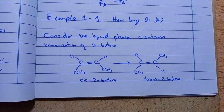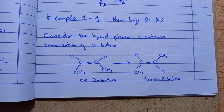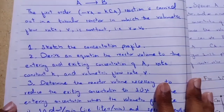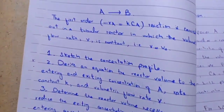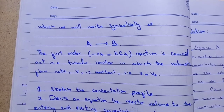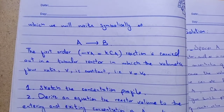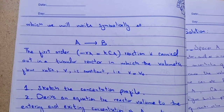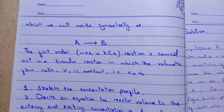Consider the liquid phase reaction: isomerization. We will write it simply and symbolically as A converted into B. This is a first order reaction, and the rate law is: minus rA is equal to K times CA. This elementary reaction is carried out in a tubular reactor.